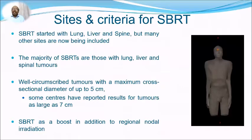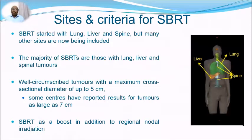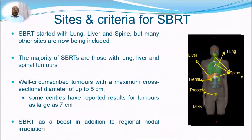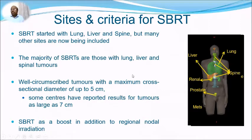SBRT started with lung, liver, and spine, but many other sites like kidney, prostate, and mediastinum are now included. The majority of SBRT cases involve lung, liver, and spinal tumors. Well-circumscribed tumors with a maximum cross-sectional diameter up to five centimeters are recommended, though some centers have gone up to seven centimeters. SBRT as a boost in addition to regional nodal irradiation is also practiced.